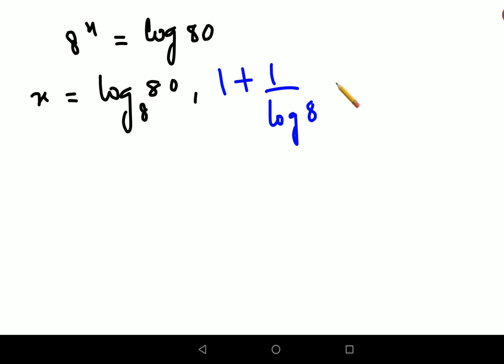So finally, we will write down the various answers which we got for value of x. One was log of 80 to the base 8. Another was 1 plus 1 upon log 8. Next was direct value which was 2.107. Here also, if the option was 2.11, then also it would have been okay.